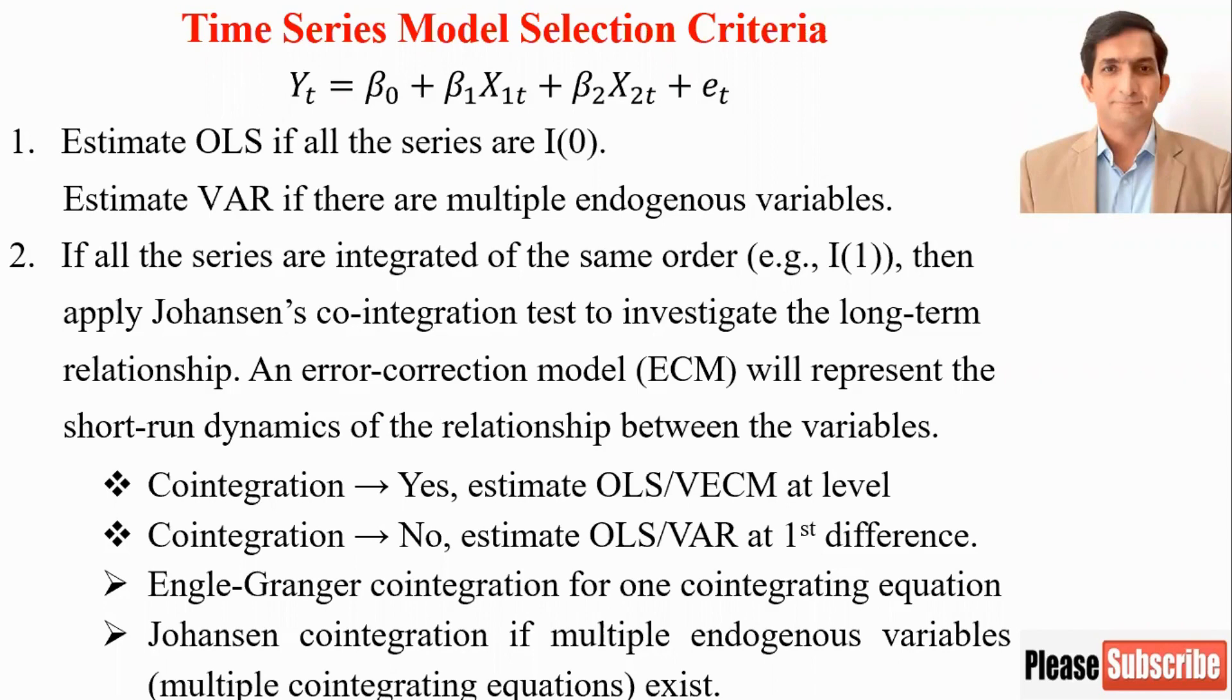When you apply Johansen cointegration, if a cointegration equation exists, then you estimate OLS or Vector Error Correction Model (VECM) at level. If there is no cointegration equation, then you estimate OLS or VAR at first difference.